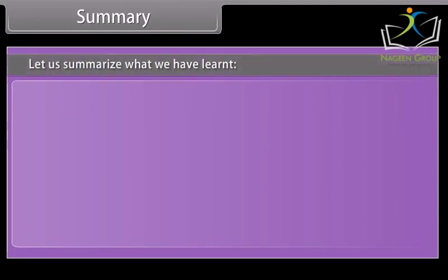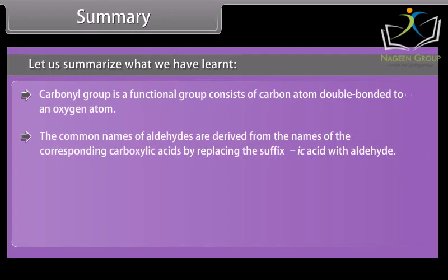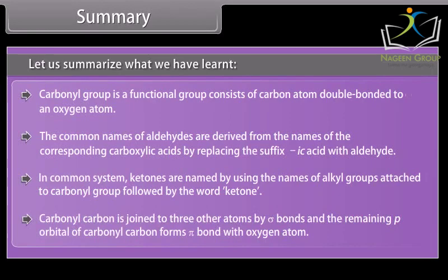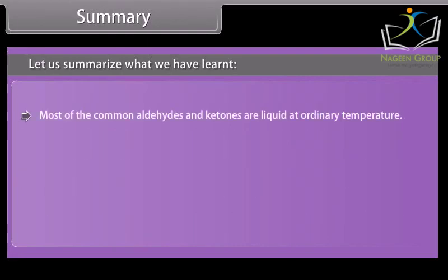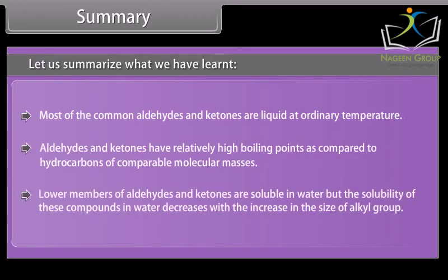Let us summarize what we have learnt. The carbonyl group is a functional group consisting of a carbon atom double bonded to an oxygen atom. The common names of aldehydes are derived from the names of the corresponding carboxylic acids by replacing the suffix '-ic acid' with '-aldehyde'. In the common system, ketones are named by using the names of alkyl groups attached to the carbonyl group followed by the word 'ketone'. The carbonyl carbon is joined to three other atoms by sigma bonds, and the remaining p orbital of carbonyl carbon forms a pi bond with the oxygen atom. Most of the common aldehydes and ketones are liquids at ordinary temperature and have relatively high boiling points compared to hydrocarbons of comparable molecular masses. Lower members of aldehydes and ketones are soluble in water, but solubility decreases with the increase in the size of the alkyl group.